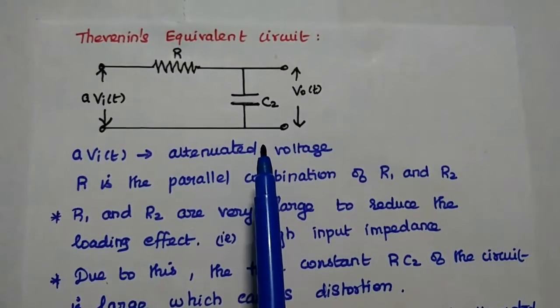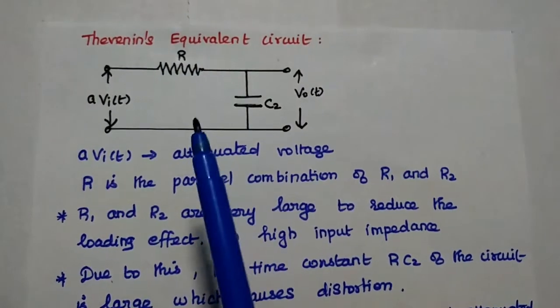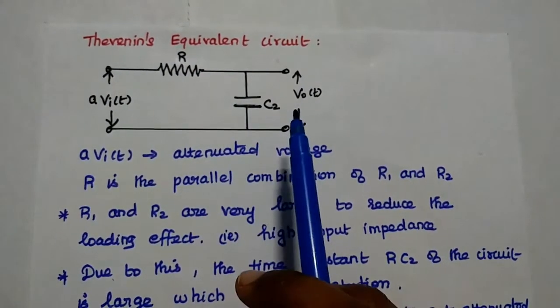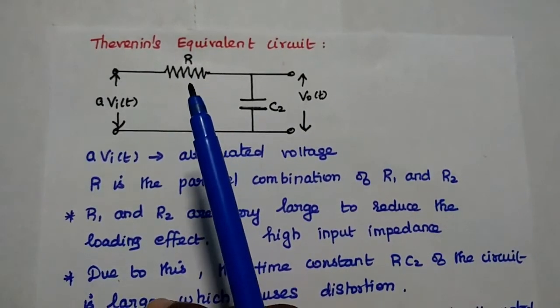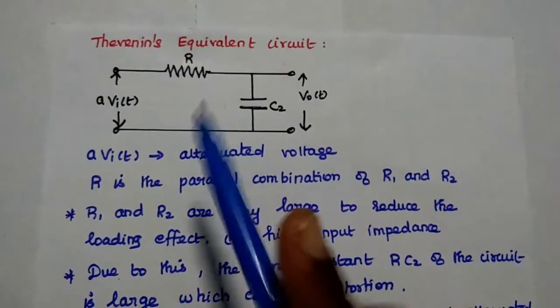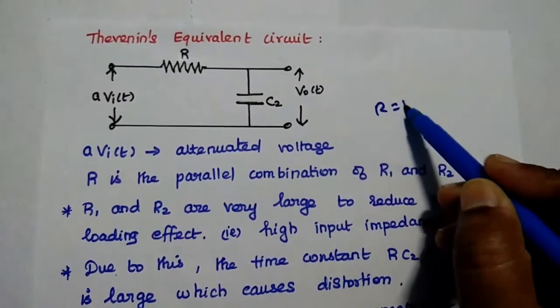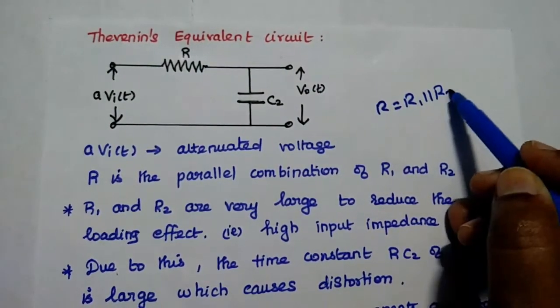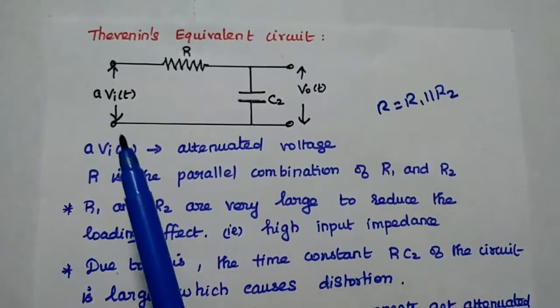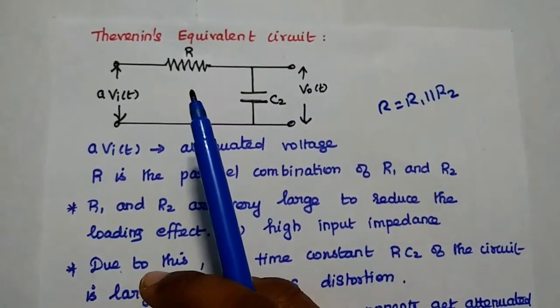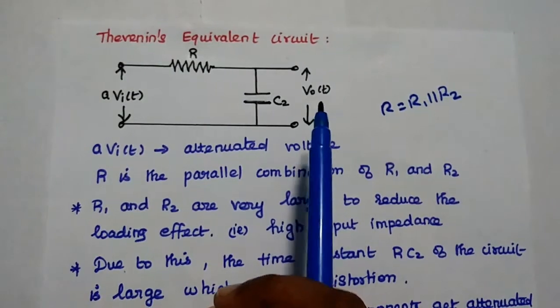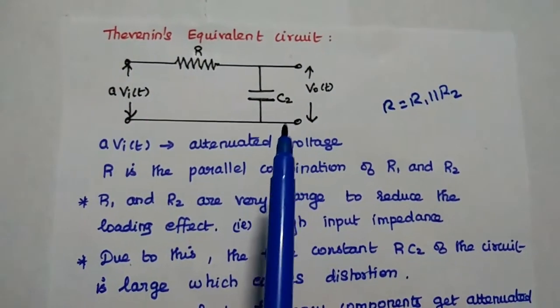Next, we are going to analyze the effect of stray capacitance using Thevenin's equivalent circuit. Here, this R1 and R2 can be represented as a resistor value R. This R equals R1 in parallel with R2. We are going to give the attenuator voltage A Vi(t) to this R and we can take the output Vo(t) across this capacitance.